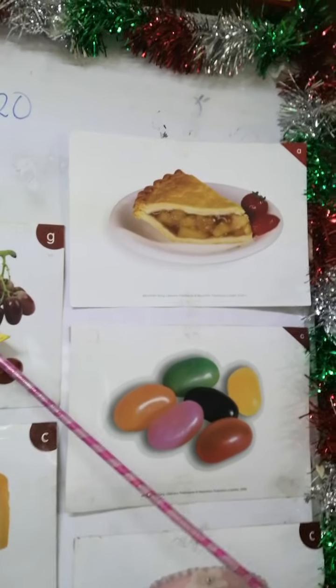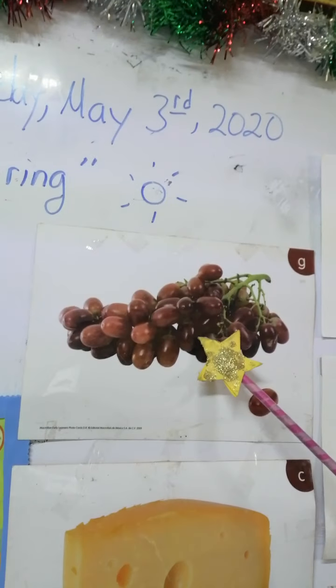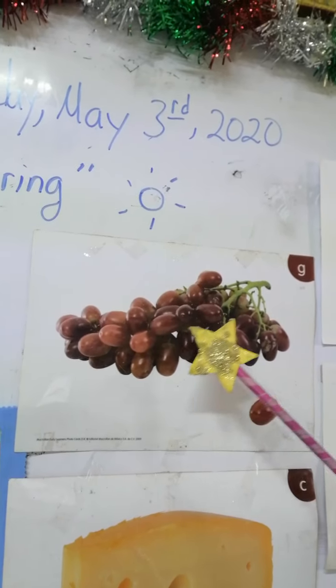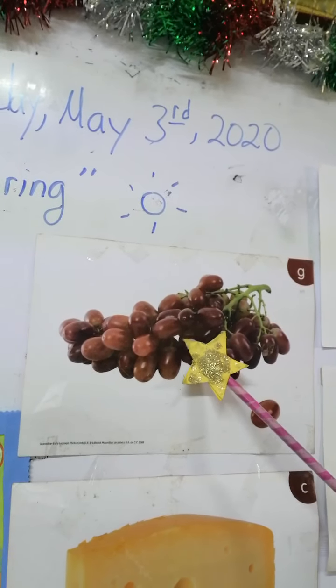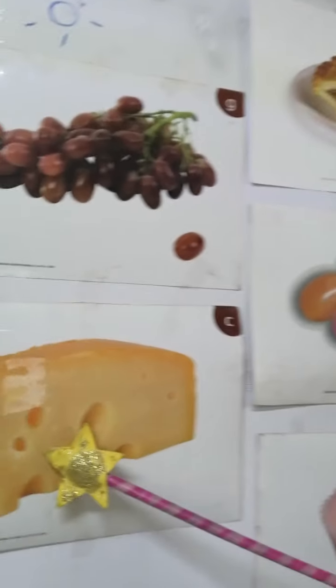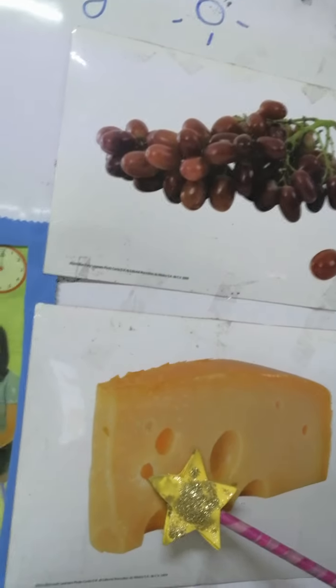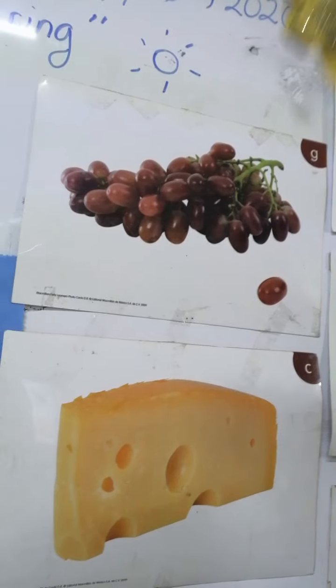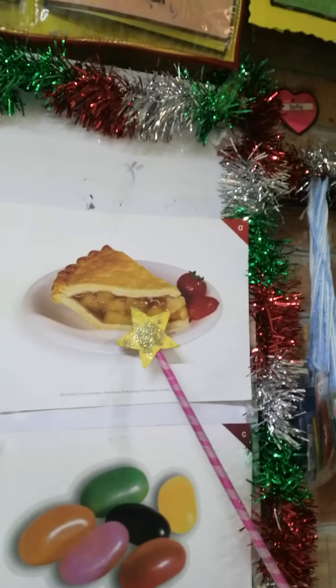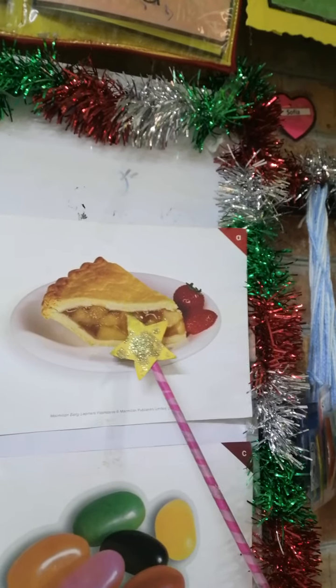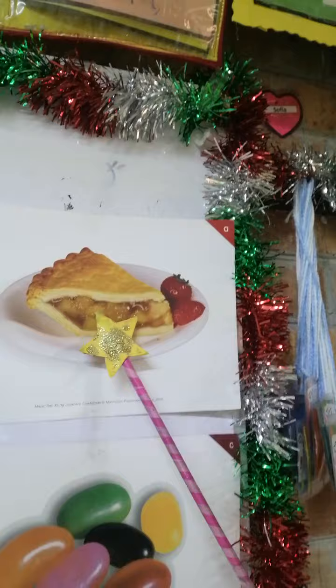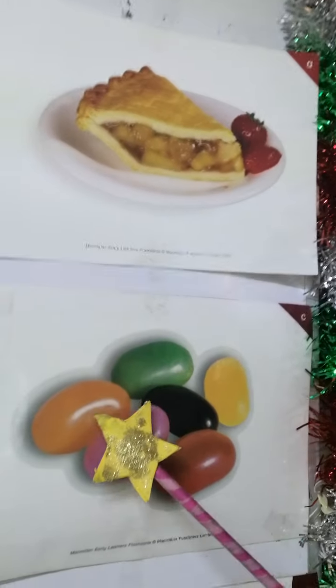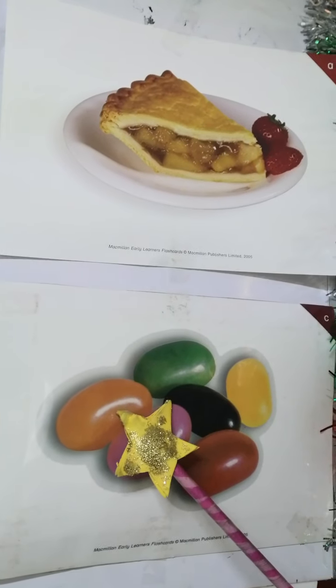Let's see the months of the year. January, February, March, April, May, June, July, August, September, October, November, December. What month is it, kids? It's June. Today is Wednesday, June.